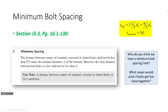This comes directly from the specification on page 16.1-130. On minimum spacing, it says the distance between standard, oversized, or slotted holes shall not be less than two and two-thirds times the nominal diameter of the fastener. So if I have a bolt diameter, I multiply it by two and two-thirds, or eight-thirds, and that is the minimum allowable bolt spacing to be used for high-strength structural bolts.